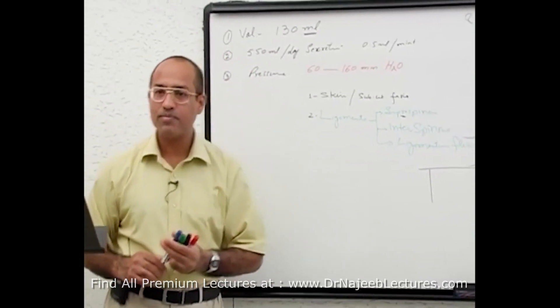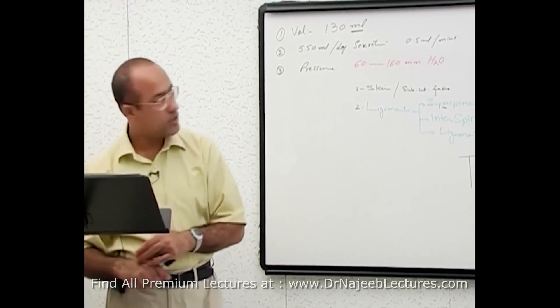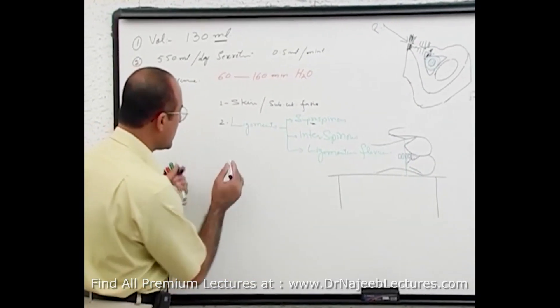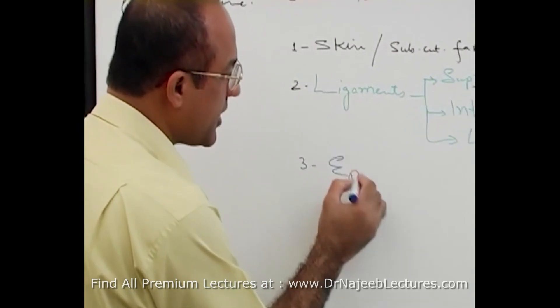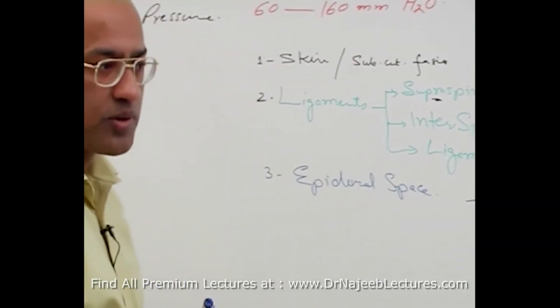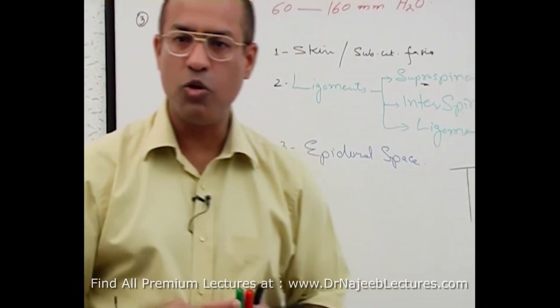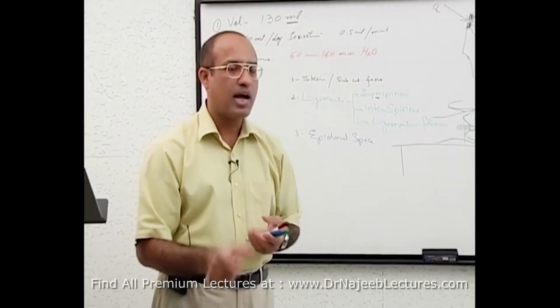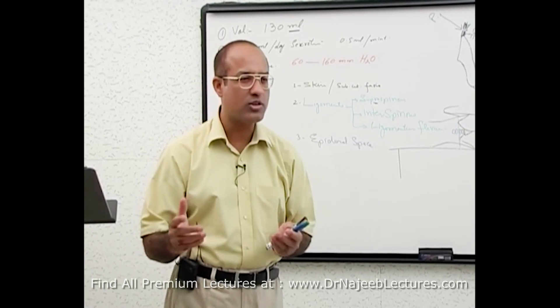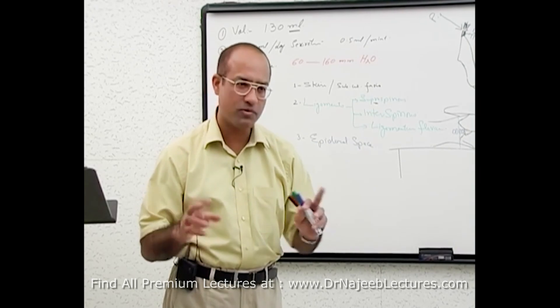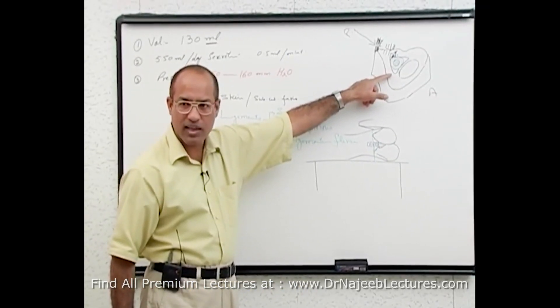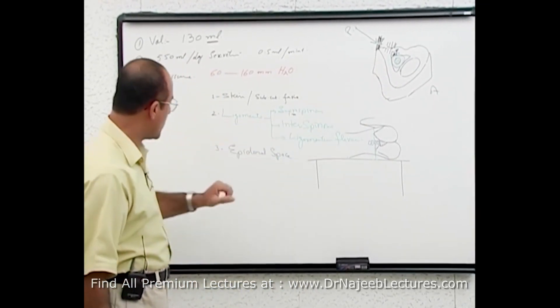Once you have gone through the ligaments. Then where you will reach? You will be just outside the dura mater. And the space outside the dura mater is epidural space. Remember, epidural space in the cranial cavity is only potential space. But in vertebral column, epidural space is really there. And it has some fat, loose areolar tissue, some lymphatics and some veins. It's really there. Are you understanding or I should make this diagram more clear? It's clear. That's good. So epidural space.